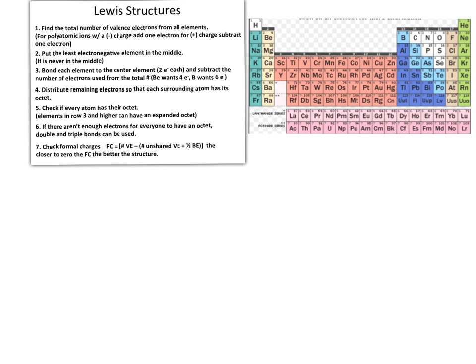Let's look at a couple of examples in which the rules for creating Lewis structures are slightly altered because of the features of the atoms involved. If we look at the molecule BF₃, we're going to put this molecule together in the exact same way as all the others we've looked at so far. We add up our total number of valence electrons, which is a total of 24 electrons.